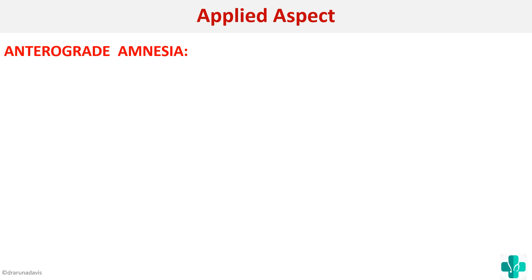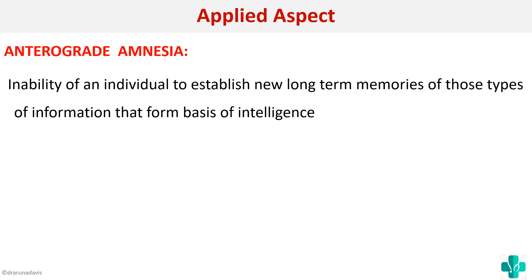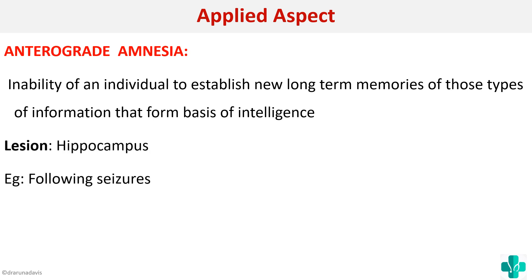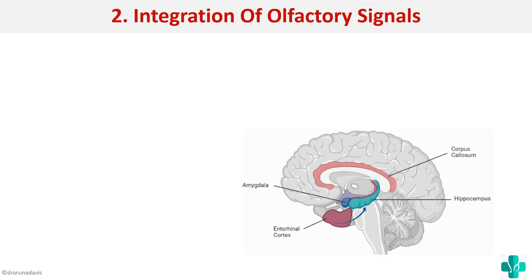If there is a lesion in this circuit, the person can have anterograde amnesia — the inability to establish new long-term memories of the type that form the basis of intelligence. He can learn new skills but cannot form new long-term memories. This lesion is in the hippocampus and is usually seen following seizures.